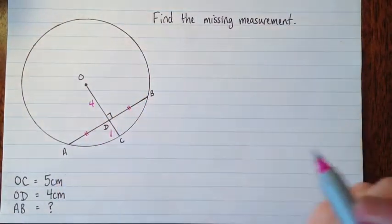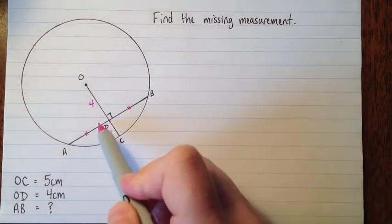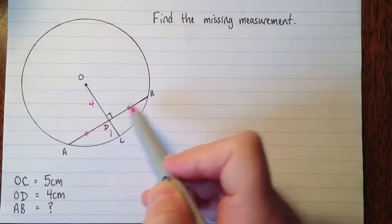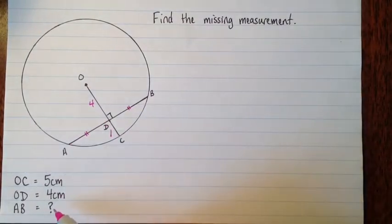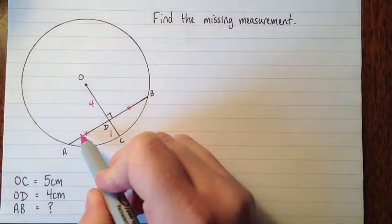So A to D is the same size as D to B. The reason that's good is that if we know how long A to D is, we just double it, and we'll have the answer to the question. Okay, so right now we don't really have a lot to go on. We don't exactly know how big this is.